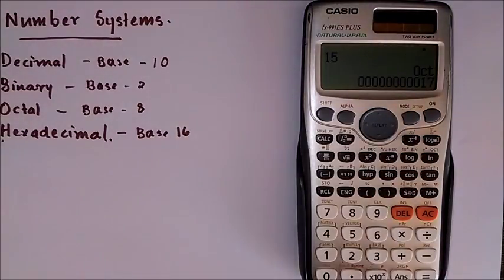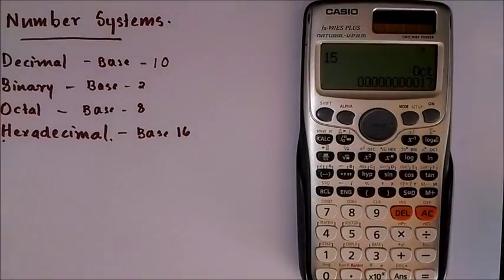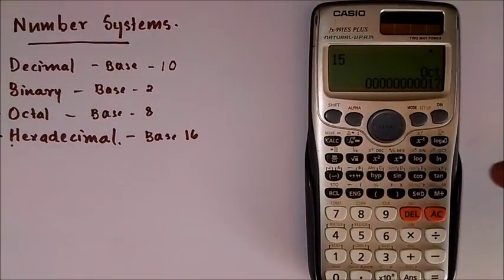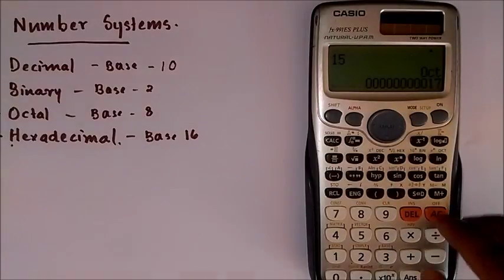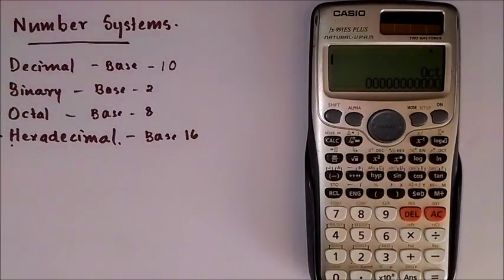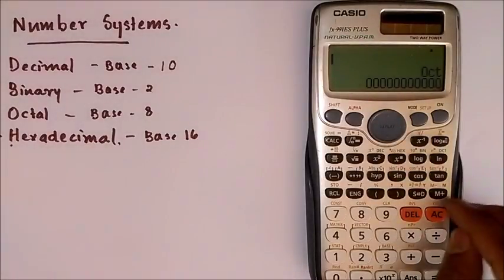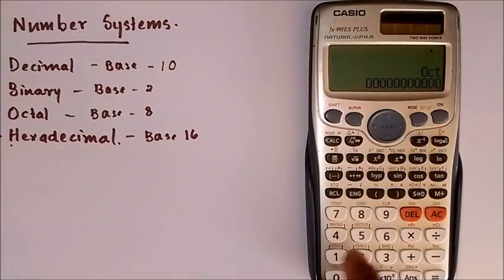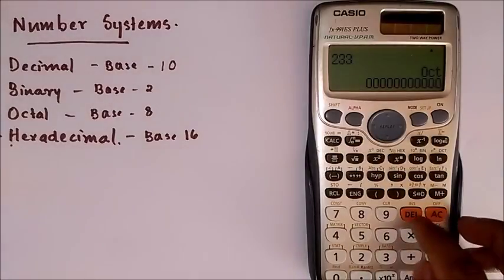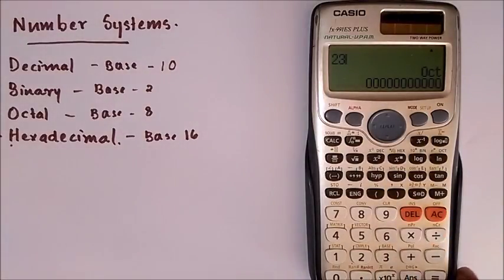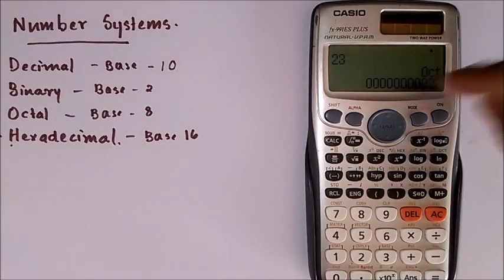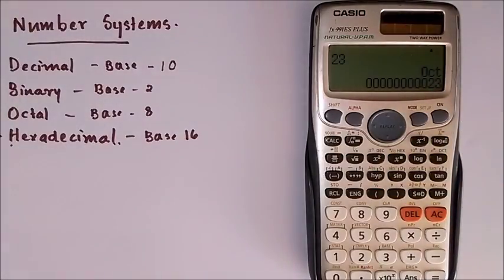Now to calculate the reverse, if we are given a number in octal or binary, first I will just reset it. I am setting it to octal and input that number, let it be 23, and click equal to. The calculator reads it and now it is representing the octal 23.